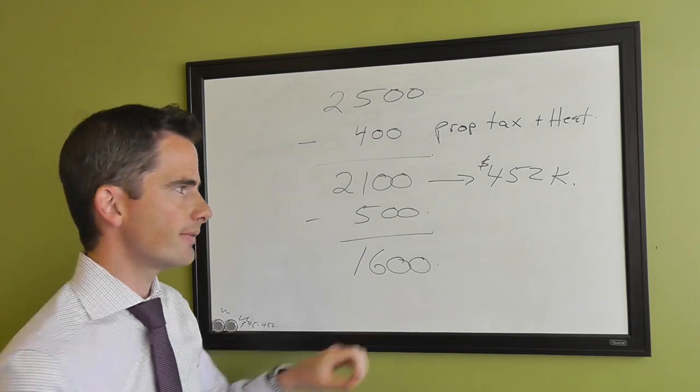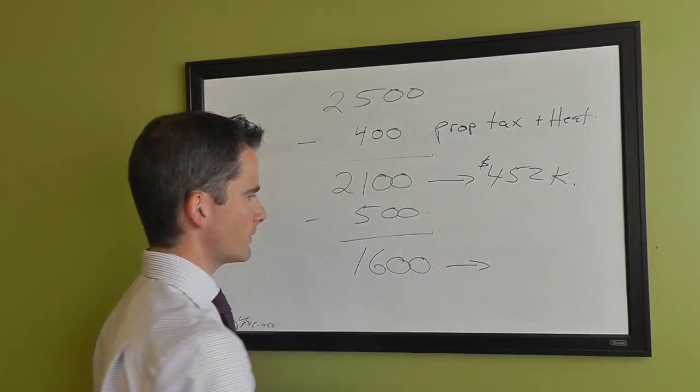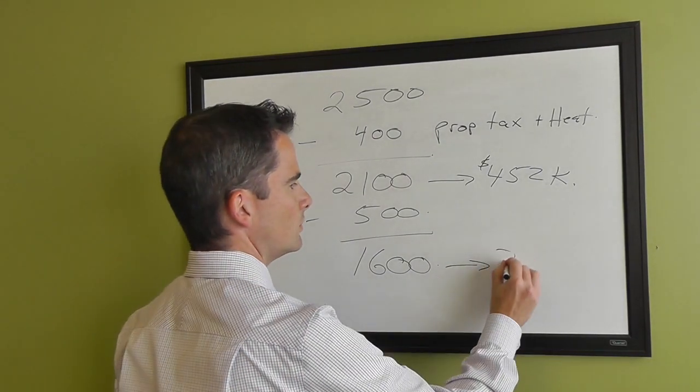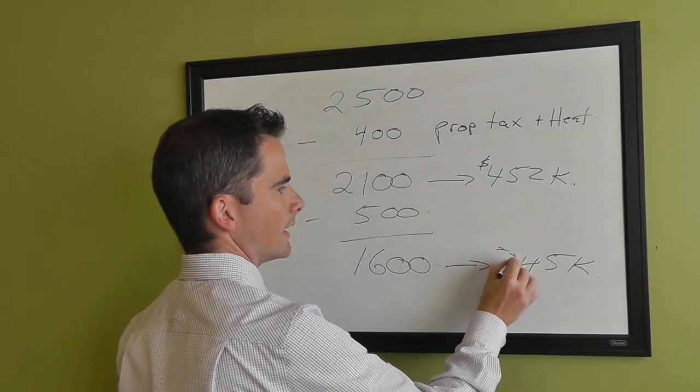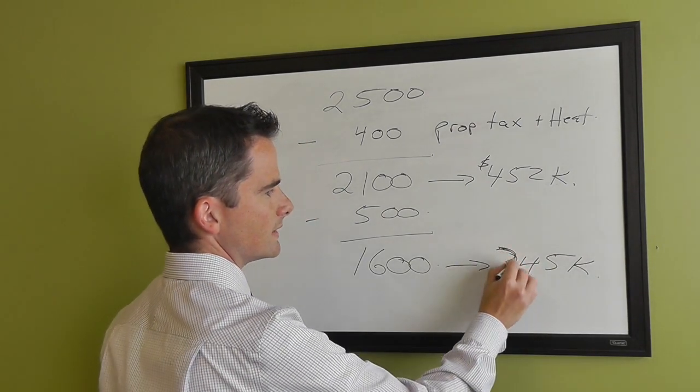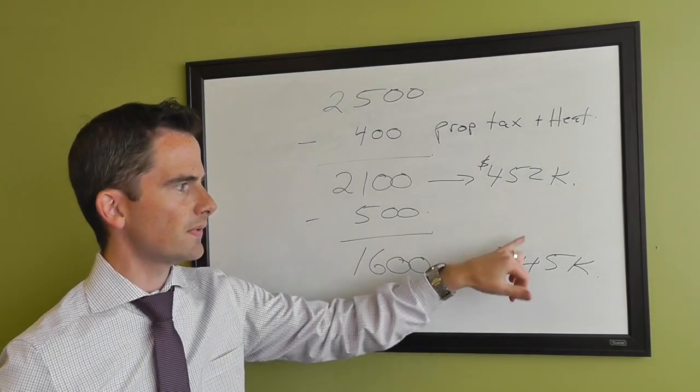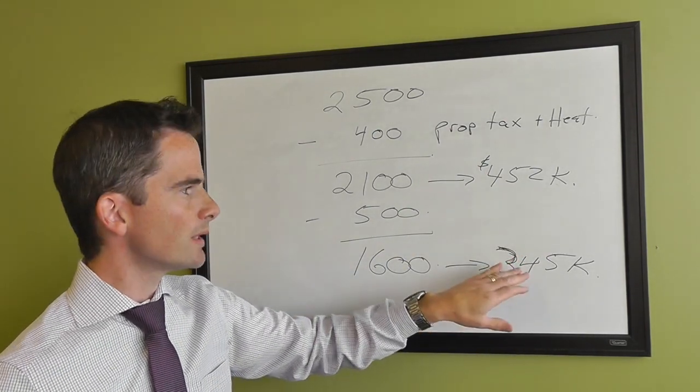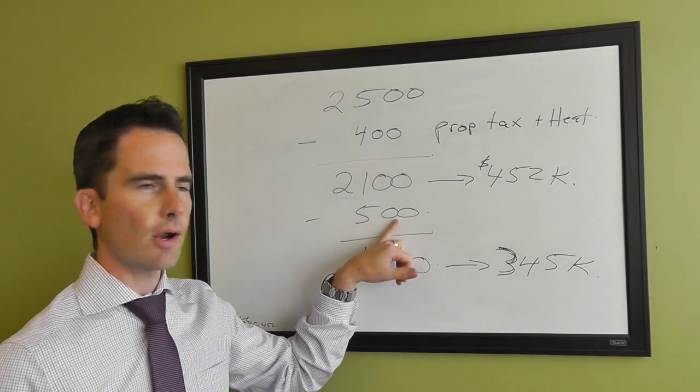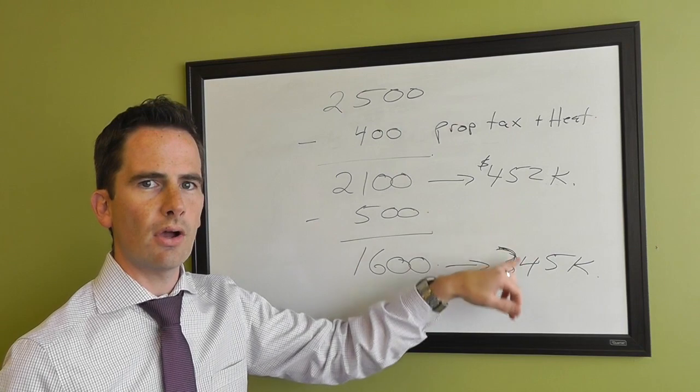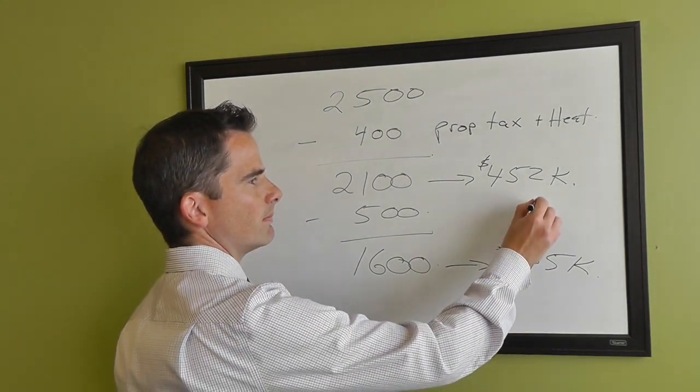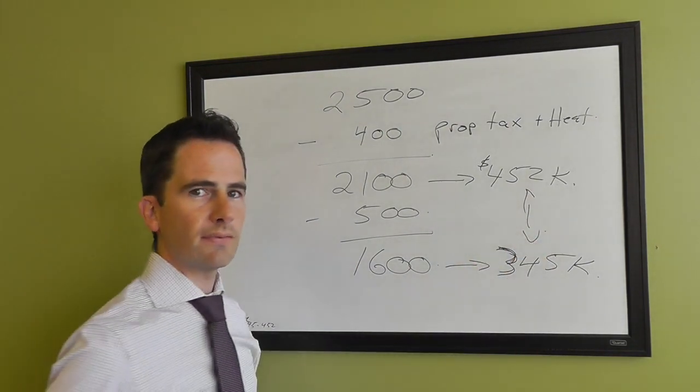So the $1,600 a month is going to give a mortgage amount of somewhere closer to $345,000 versus $452,000. You can see that just a $500 car payment can have an impact of over $100,000 in mortgage money that somebody qualifies for.